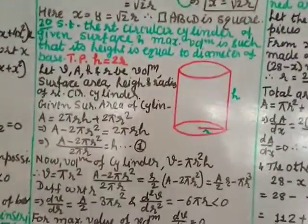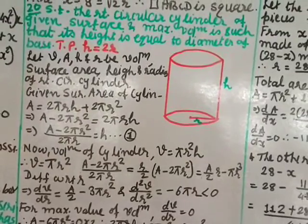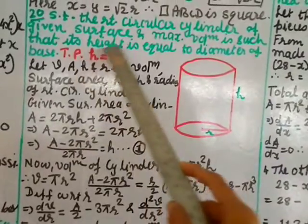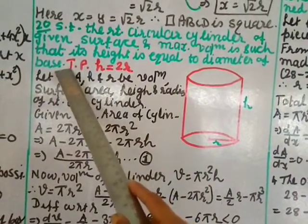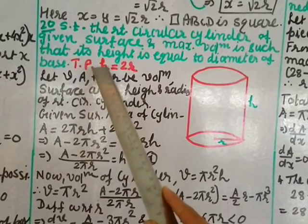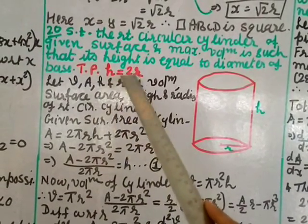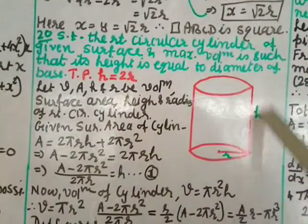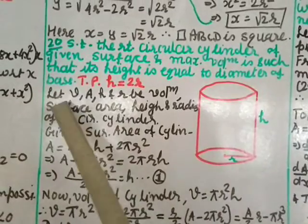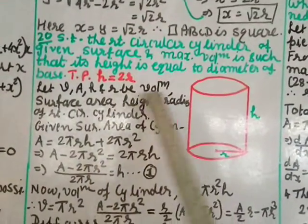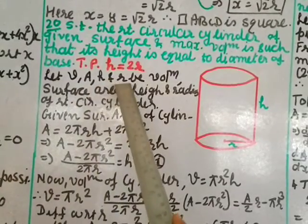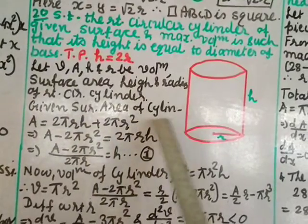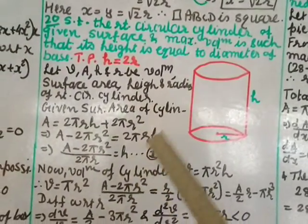Question 20: Show that the right circular cylinder of given surface area and maximum volume is such that its height is equal to the diameter of the base. We need to prove h equals 2r, where r is the radius. Let V, A, h, and r be the volume, surface area, height, and radius of the base of the right circular cylinder.